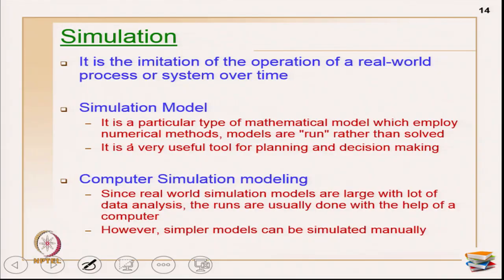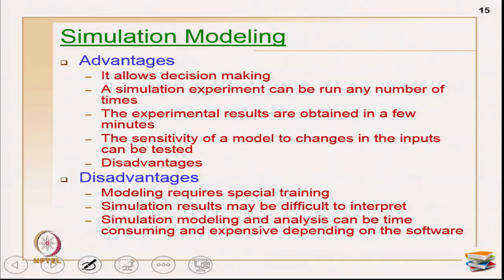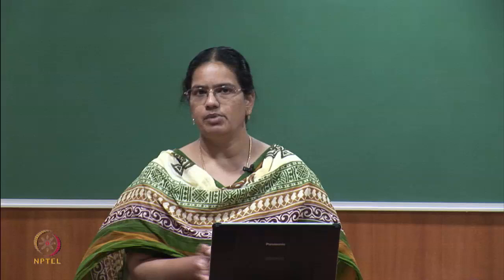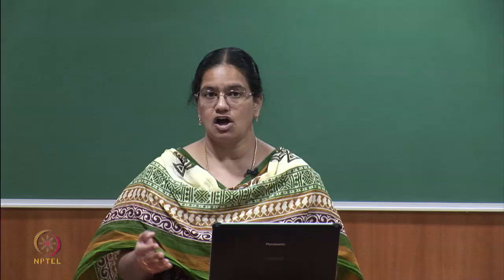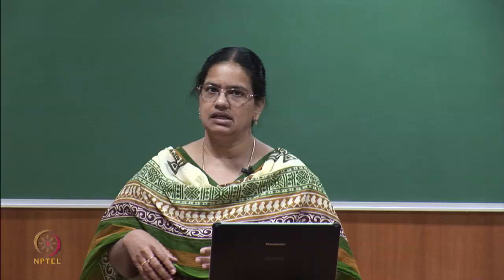But simpler models can be simulated manually - in the previous example I showed the manual way using a bar chart. The primary advantage of simulation as an experimental technique is that it allows decision making. You cannot make trucks move on the road and then calculate; you need to decide how many trucks, loaders, and excavators you need, how long equipment waits, and how to cut down duration. For all these decisions you need a simulation model.